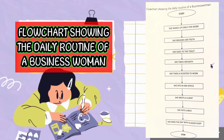The next flowchart shows the daily routine of a business woman. The first shape is the oval shape and it is start. When she starts, she wakes up early for work. After waking up, she goes straight to brush her teeth. After brushing her teeth, she goes to the toilet. After using the toilet, she takes a bath. After taking a bath, she takes a scooter to work. When she got to work, she sits in her office to relax before working for the day.